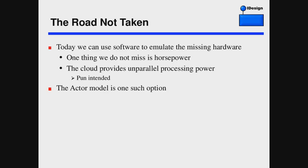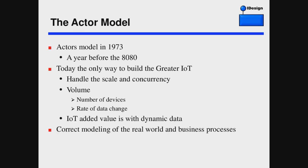Today we've reached the end of the road we did take. We cannot make computers any faster. Sequential computing is a dead end. But what we can do today is use software to emulate the hardware we never got in the 70s. The one thing we don't miss today is horsepower. Cloud computing today provides unparalleled processing power — pun intended — so we can use this to emulate parallel processing. The actor model in software is one of these possible options. And the actor model is not new: it was first put forward by Hewitt in 1973 — a year before the 8080, a year before Moore's Law, a year before we decidedly took the other road.